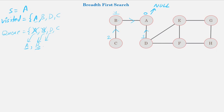There are no other adjacent vertices of B, so we pop the next element from the queue, which is D. We explore all adjacent vertices of D. A is already visited so we skip it. E is not visited, so we add E to the visited list and to the queue. The parent of E is D and its level is the level of D plus one, which is 2. Similarly, the next adjacent vertex of D is F — we add F to the visited list and to the queue. The parent of F is D and its level is 1 plus 1, which is 2.